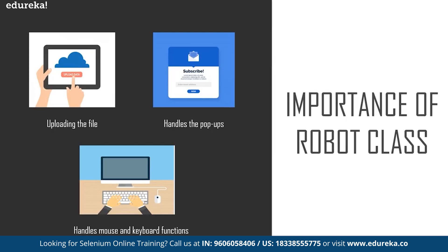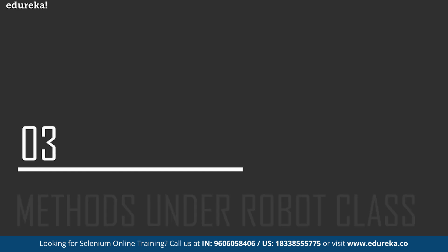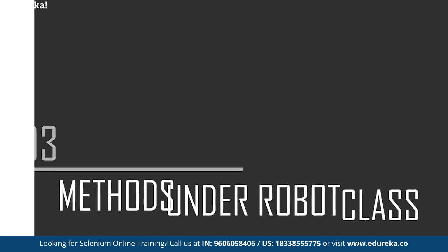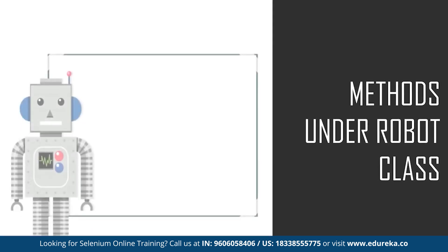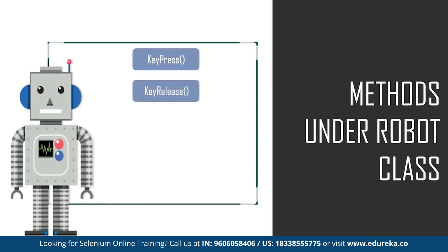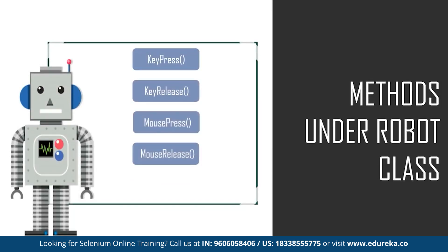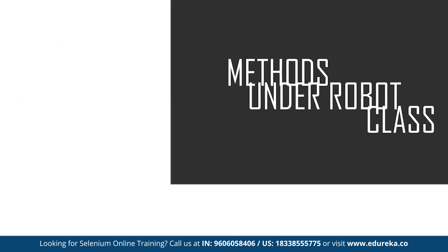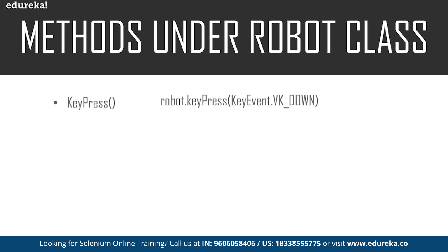So that's what the Robot class is and why we use it in Selenium. Now let's move on to the different methods used while working with this Robot class. There are basically five different methods. Since it handles all keyboard and mouse functions, the first method is key press, which is used to press any key on the keyboard. For example, a specific command will press the up key on the keyboard.